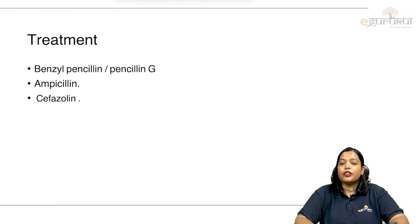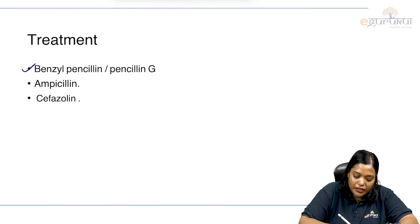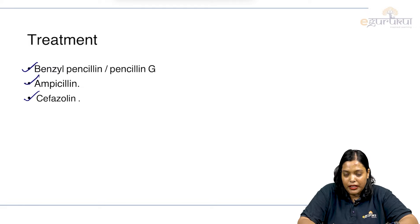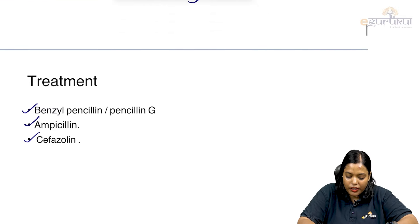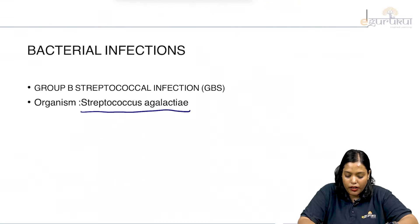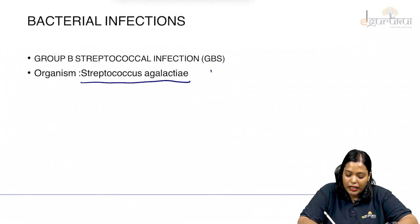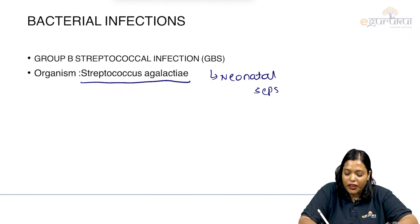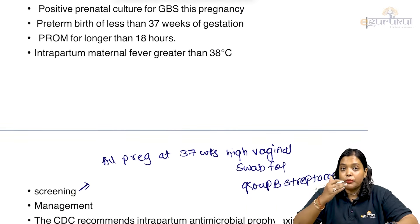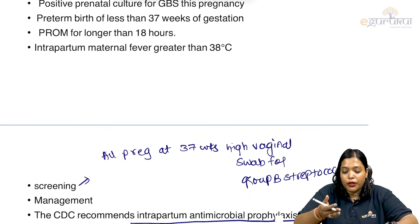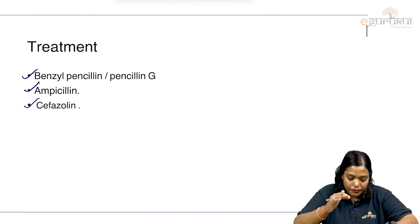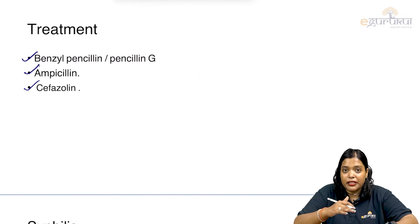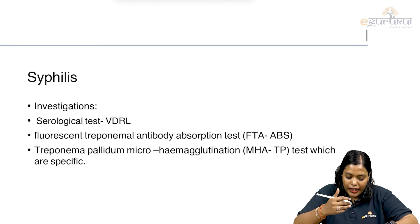The treatment for group B streptococcus is benzyl penicillin (penicillin G), ampicillin, or cefazolin. Group B streptococcus mainly causes neonatal sepsis or neonatal meningitis. Since it is mainly transmitted during delivery, you have to give either ampicillin or benzyl penicillin at the onset of labor.